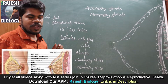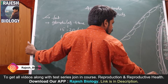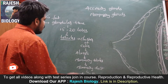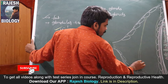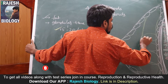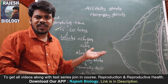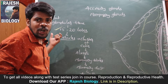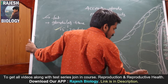Fat tissue is present around the glandular tissue. The yellow color lining is the glandular tissue. The glandular tissue is divided into 15 to 20 lobes — here is a lobe, another lobe, another lobe. It is a sectional view so we can observe only a few lobes. Every lobe again divides into so many lobules.